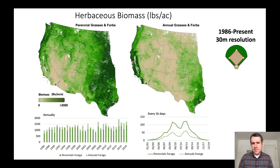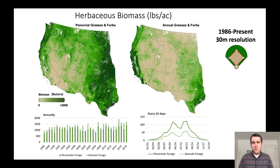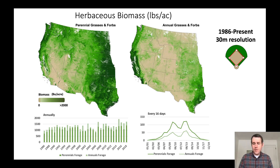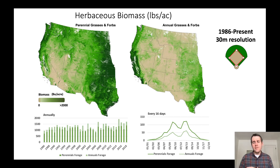We use this estimate of vegetation cover to help produce an estimate of rangeland production or herbaceous biomass. This data set is also separated into two different categories: perennial forbs and grasses, and annual forbs and grasses. It is available for the same geography and for nearly the same time period, from 1986 to present, at the same 30-meter resolution. These data sets are available annually — 1986, 1987, 1988, all the way up to present day — and are also available every 16 days within a given year, so you can look at the growth curve of rangeland production from the beginning of the year to the end.